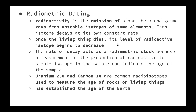The decay of each isotope can act as a radiometric clock, because a measurement of the proportion of radioactive to stable isotope in a sample can indicate the age of that sample. By measuring the amount of uranium-238 still present in rock compared to the amount of lead, the age of the rock can be determined with an accuracy of greater than 95%. Carbon-14 can also be used to measure the age of rocks; it has a half-life of about 5,500 years, so it is commonly used. Both radioisotopes have been used to help establish the age of Earth by measuring the age of particular rocks found in various locations.